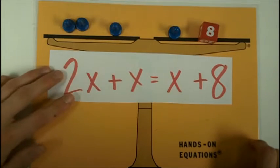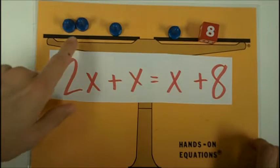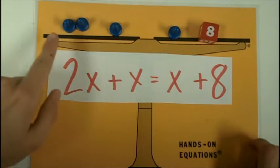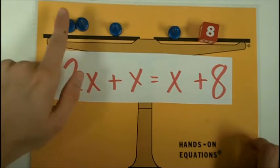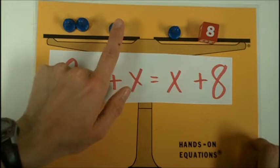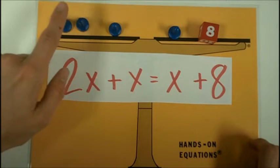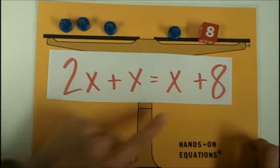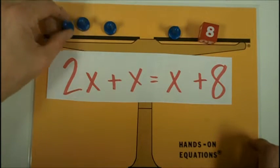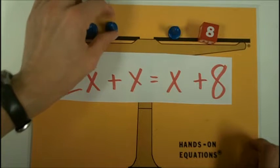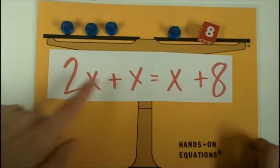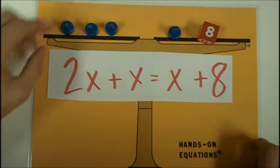Then we're going to use guess and check. I would immediately see that ones are too small because that would be three over here and this side is way bigger. Twos would be two, four, six. That's too small over here. Let's try three. Three, six, nine. Three plus eight is not going to equal nine. Let's try four. Four, eight, twelve. Four plus eight equals twelve. So x in this equation must equal four.